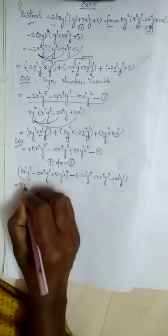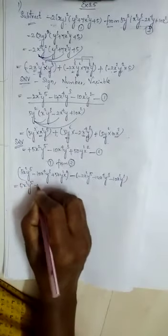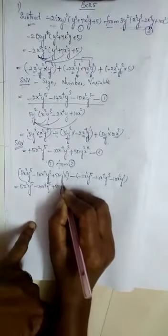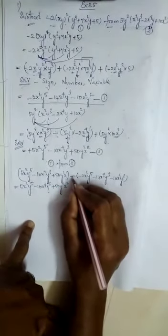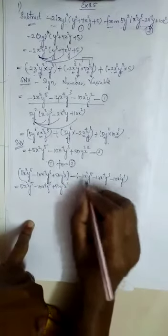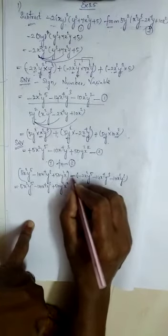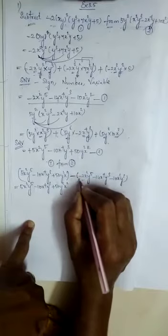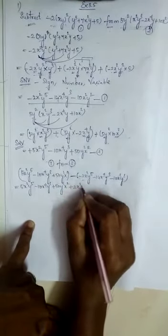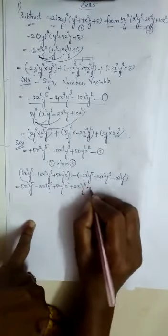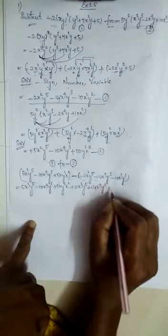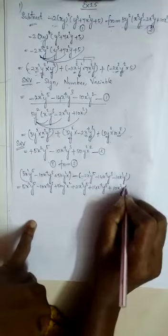So we have: 5x squared y power 5 minus 10x power 4 y cubed plus 50y squared x squared, minus bracket minus 2x squared y power 5 minus 14x power 4 y cubed minus 10x squared y squared bracket. Outside the bracket there is a negative sign, so change the sign of all terms inside: minus becomes plus 2x squared y power 5, minus becomes plus 14x power 4 y cubed, minus becomes plus 10x squared y squared.